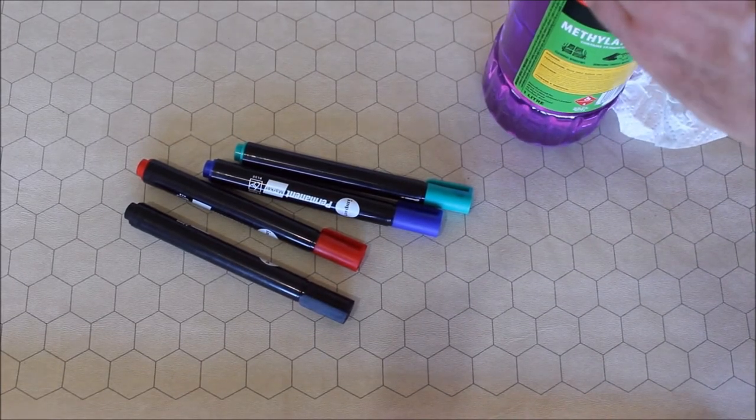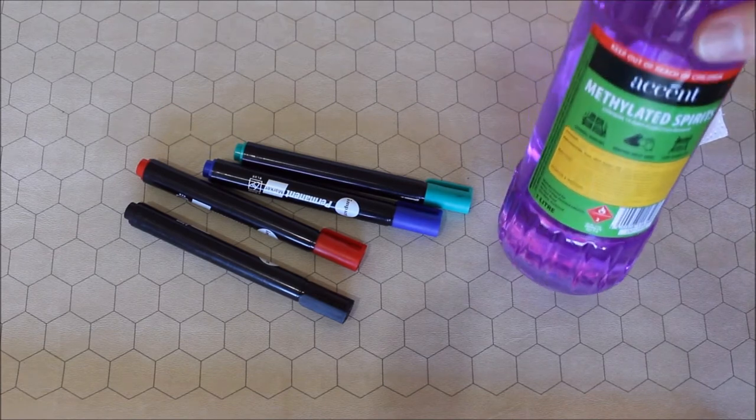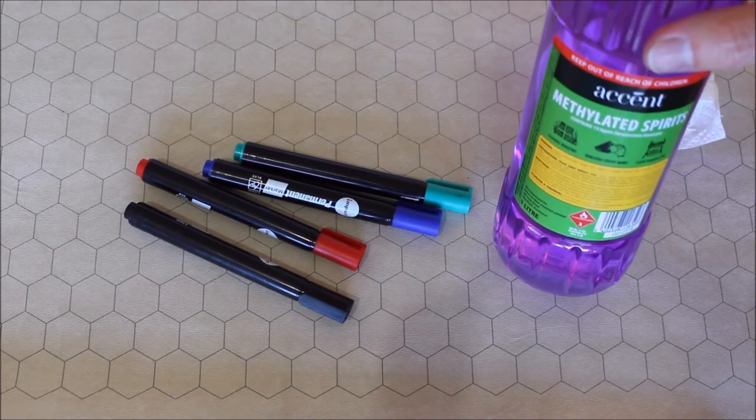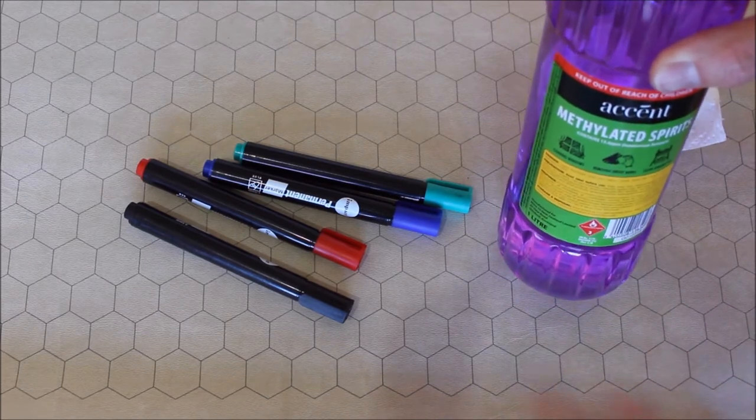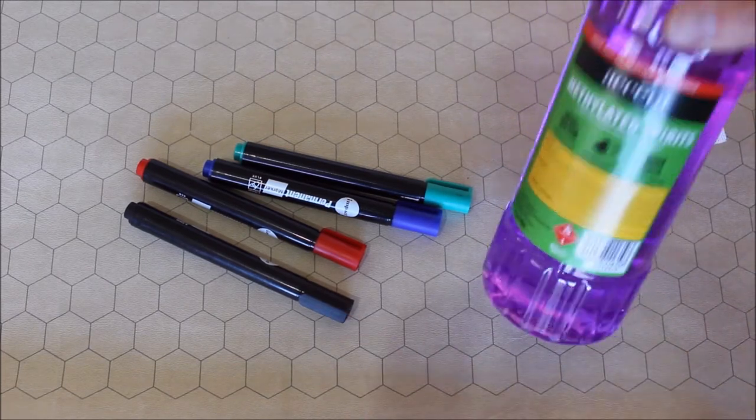Okay, there it is. Methylated spirits. Four applications. Rubbed really hard. Hasn't damaged the mat. The grid is still intact and all of the marks, doesn't matter what color it is, all come off.